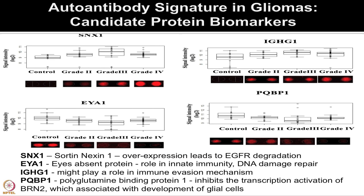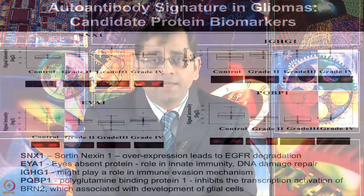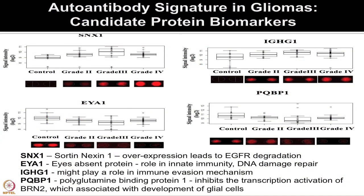The two other identified proteins are EYA1 and PQBP1. EYA1, the eyes absent protein, plays an important role in innate immune response and DNA damage repair, and is already known to play an important role in cancer. Interestingly, the level of this protein is high in controls and as the disease progresses from grade 2, 3, and 4, the signal for these spots goes down. Similarly, PQBP1 (polyglutamine binding protein 1) shows signal going down from control to grade 4. PQBP1 is involved in inhibiting the transcriptional activation of BRN2, which is associated with development of glial cells. Can we look at some of these biomarkers across other diseases as well, since many proteins might show a generic response for any tumor type?